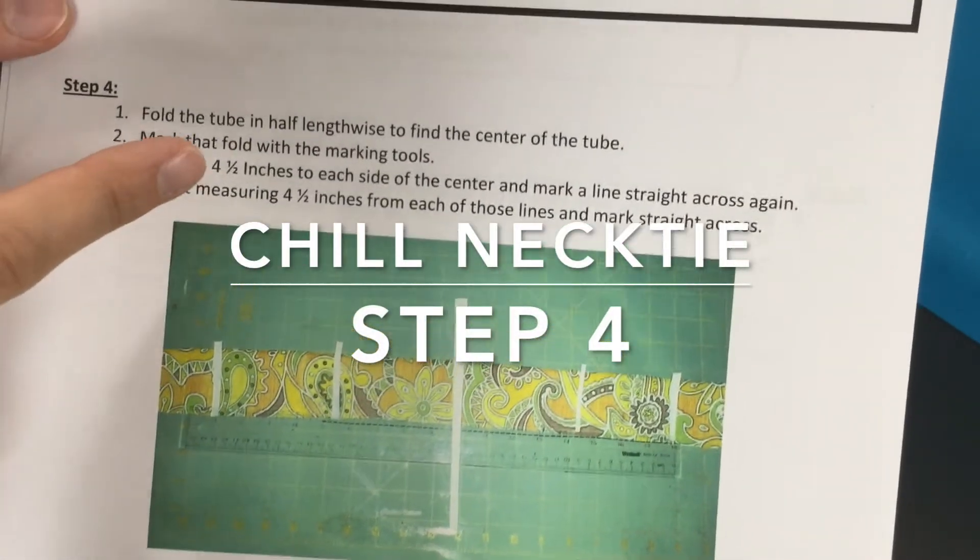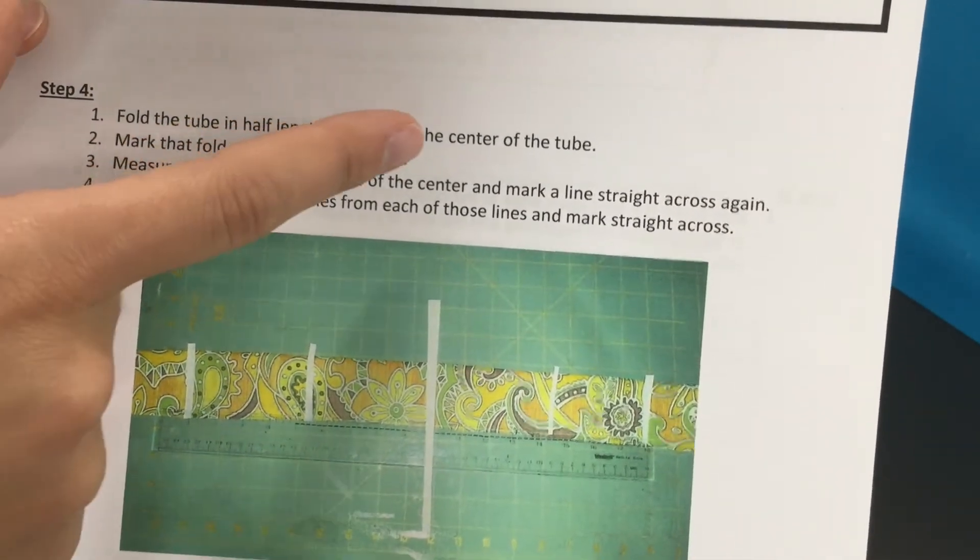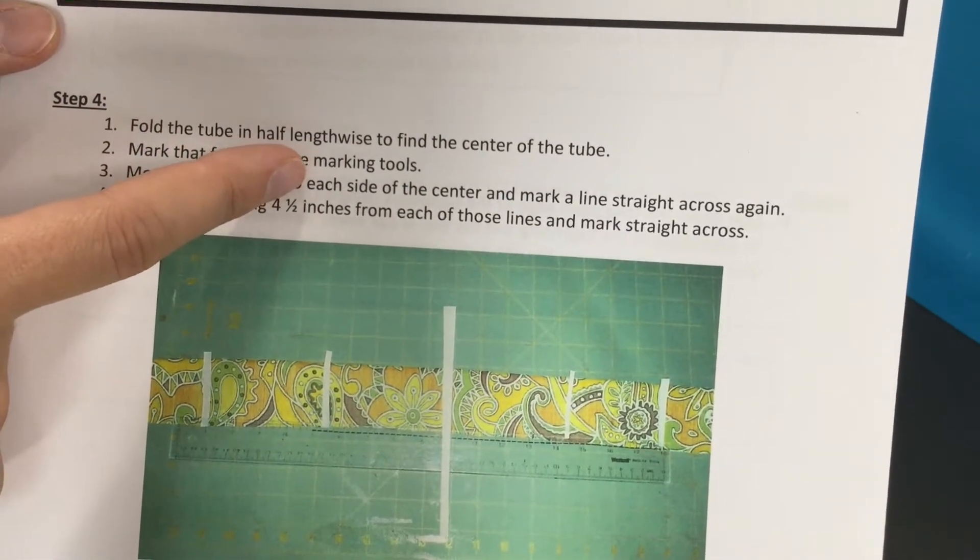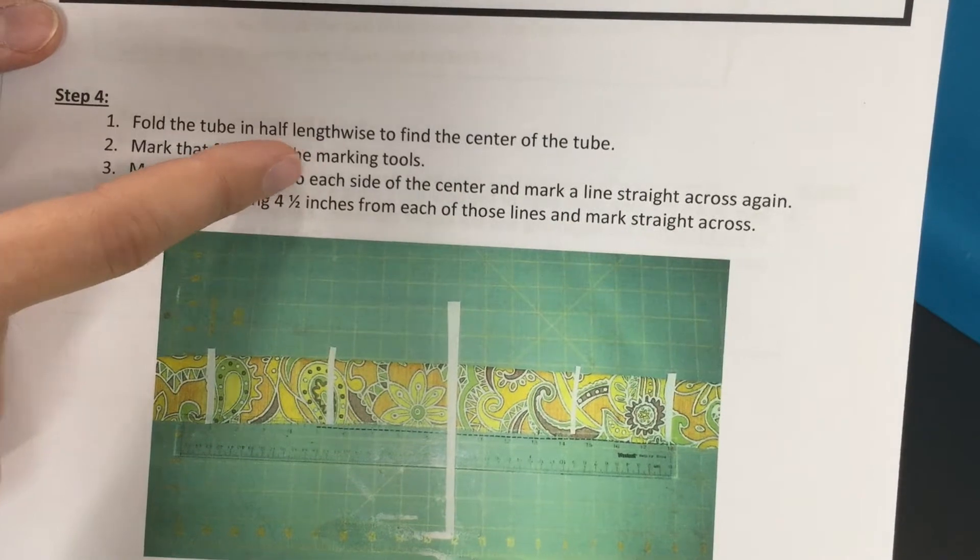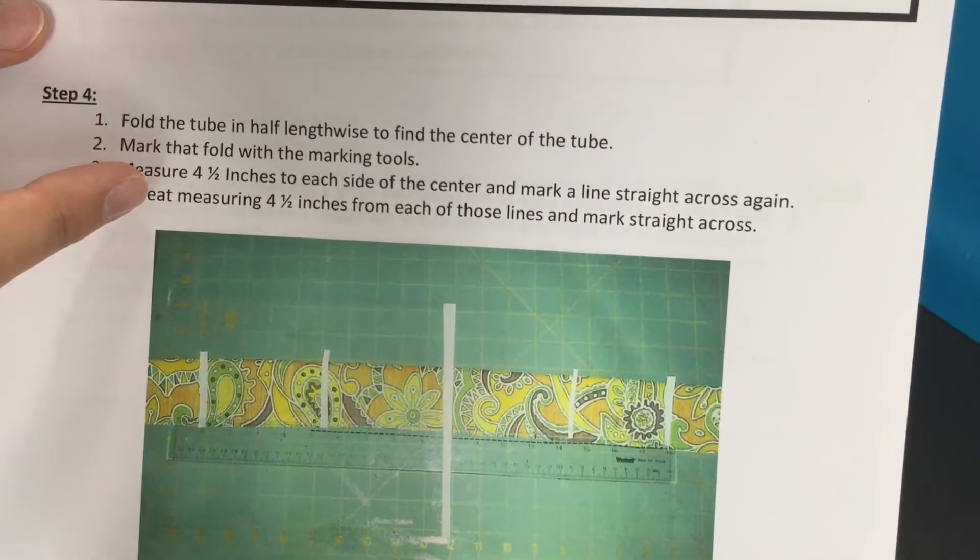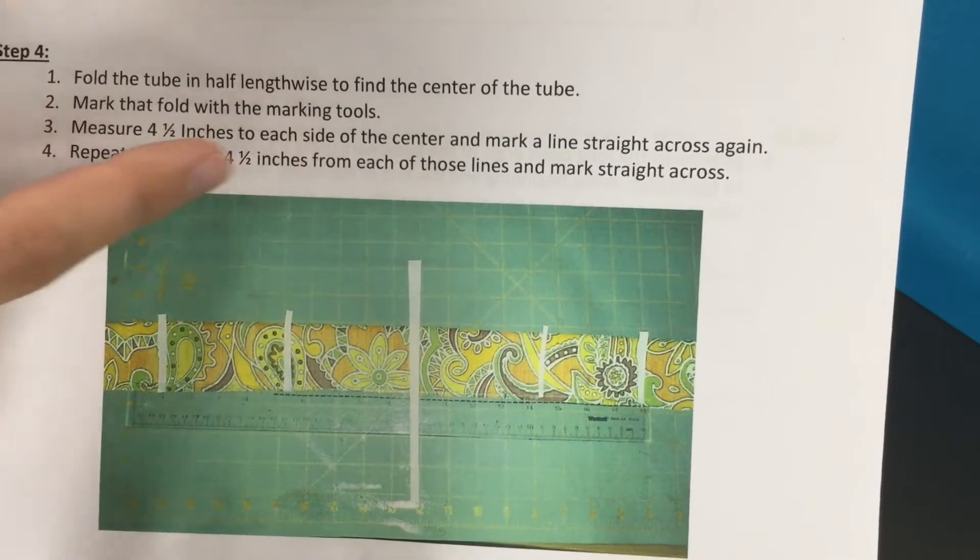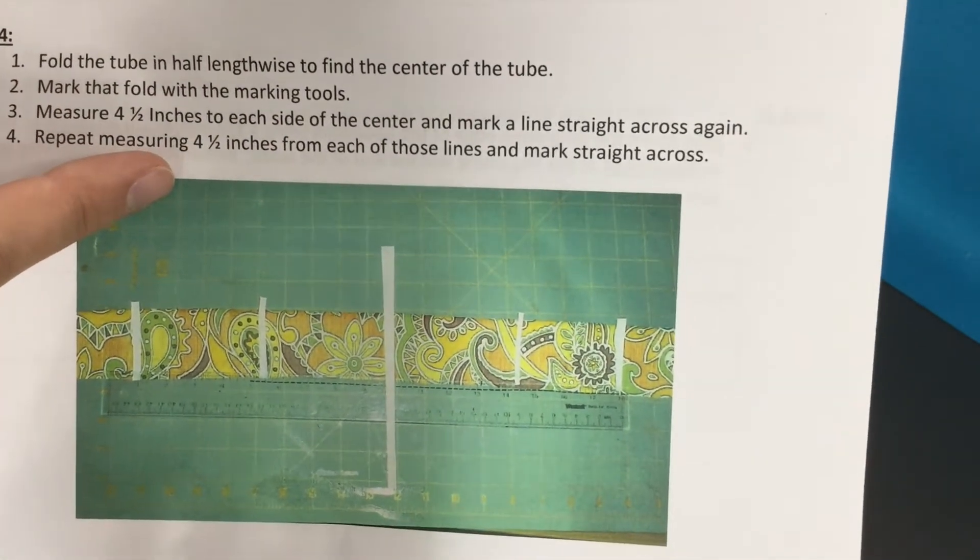Your next step is you're going to fold your tube in half to find the center, and then we're going to mark that fold with one of our marking tools so we know where the center is. We'll be sewing on the center. And then we're going to measure four and a half inches to each side and draw lines and repeat one more time.